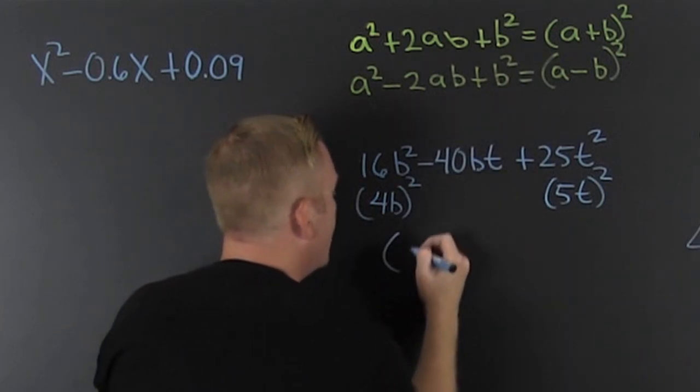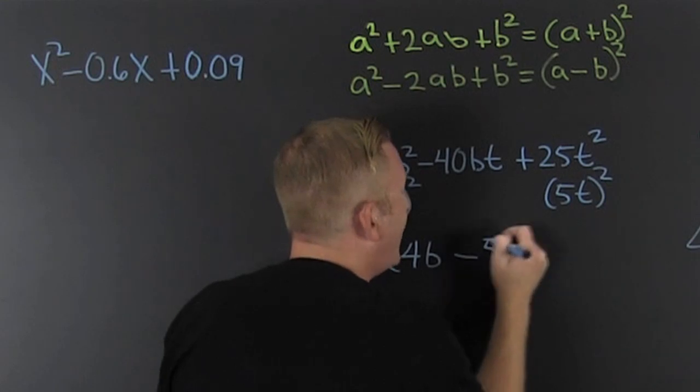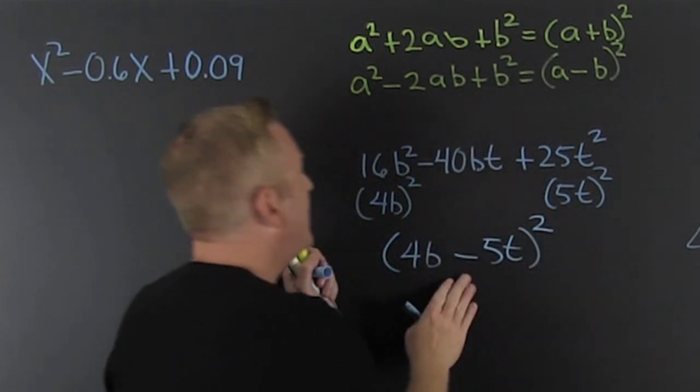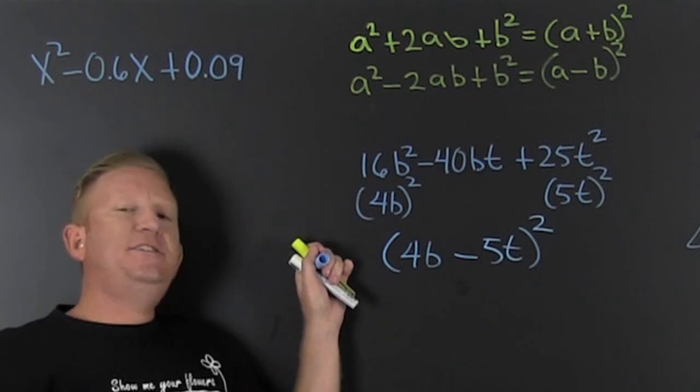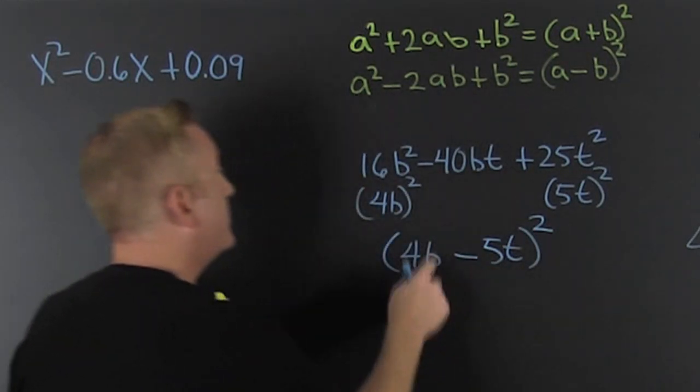So you've got 4b. And then that's a minus, so that's minus 5t. And that whole thing is squared. But if you don't believe me, check it. Multiply that sucker out. See if you get the original. Oh yeah, sure. You sure do.